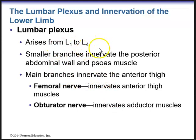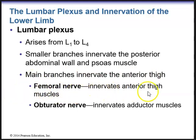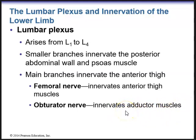The lumbar plexus arises from L1 to L4. Smaller branches innervate the posterior abdominal wall and the psoas muscle. The main branches of the lumbar plexus innervate the anterior thigh: the femoral nerve innervates the anterior thigh muscles, and the obturator nerve innervates the adductor muscles, helping with adduction toward the midline of the body. Remember the mnemonic VAN for the femoral vessels: V for vein, A for artery, N for nerve — the nerve is the most lateral of those structures.